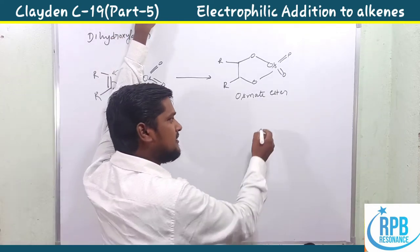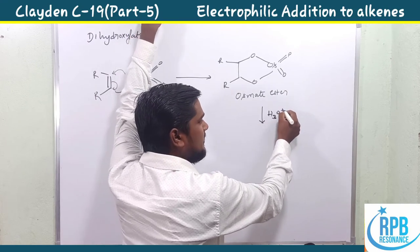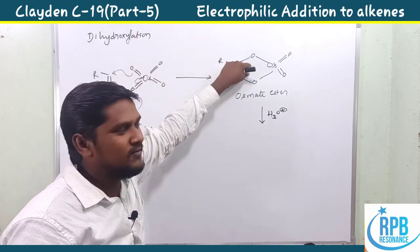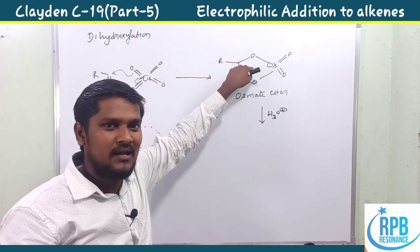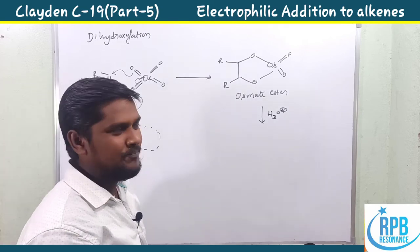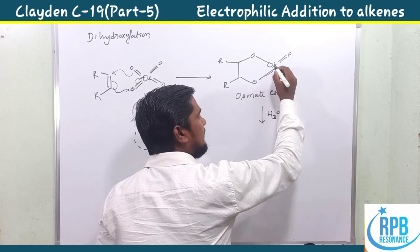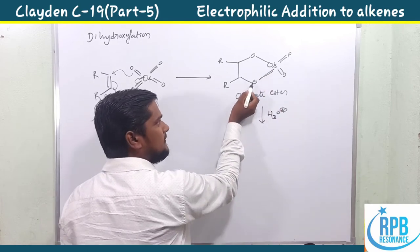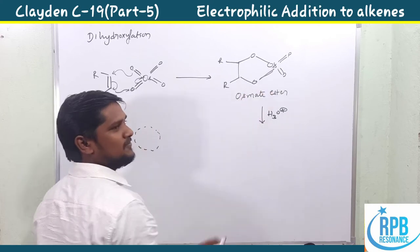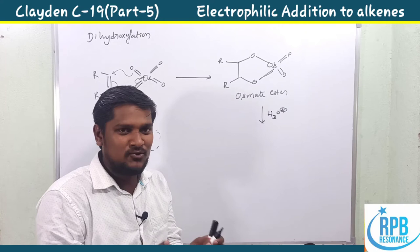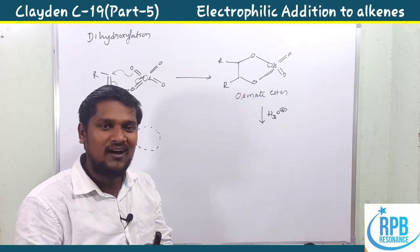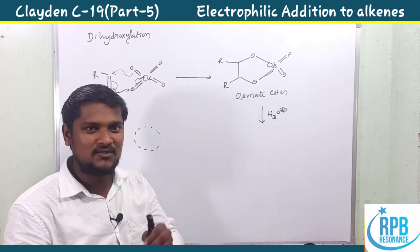After formation of the osmite ester, which is very unstable, hydrolysis occurs and the ester is cleaved to give our final desired product. There are two competing bond cleavages: the carbon–oxygen bond or the osmium–oxygen bond.